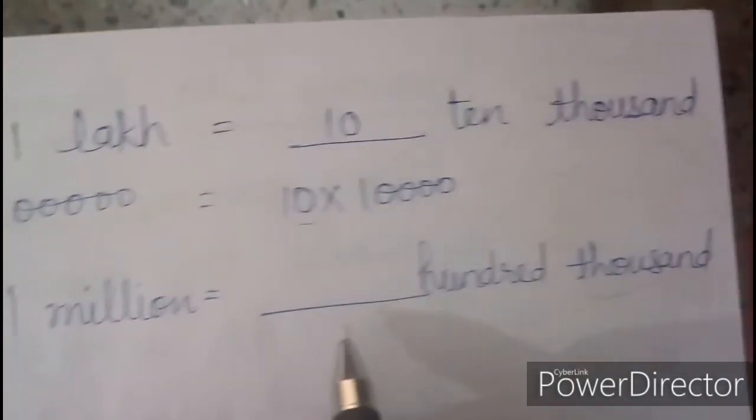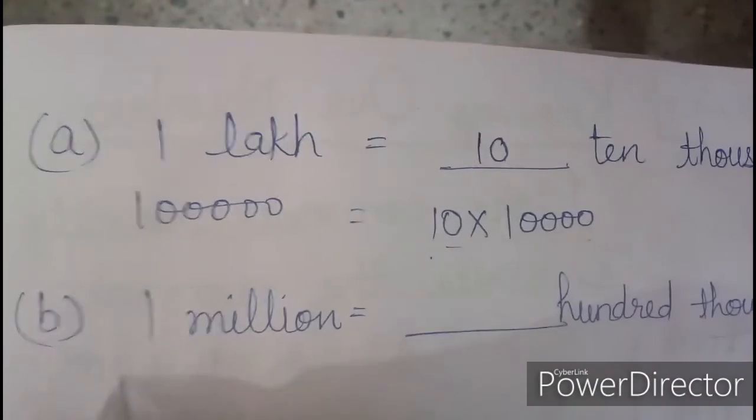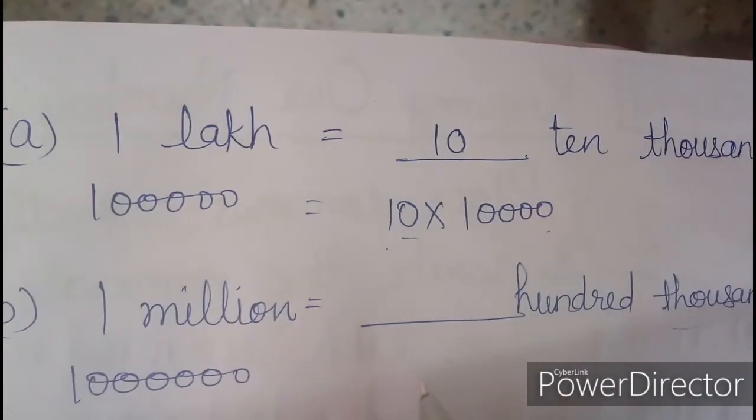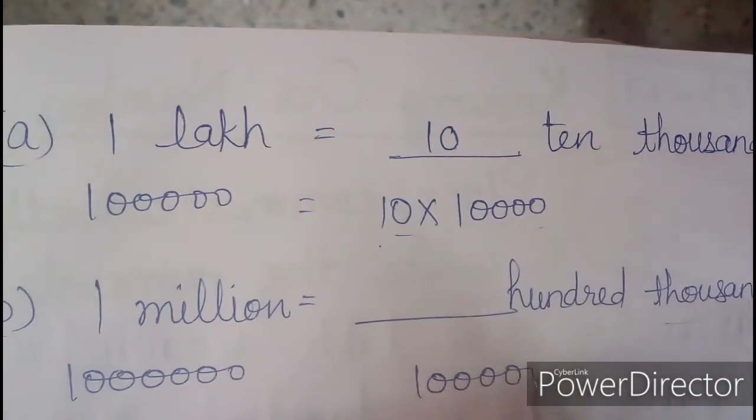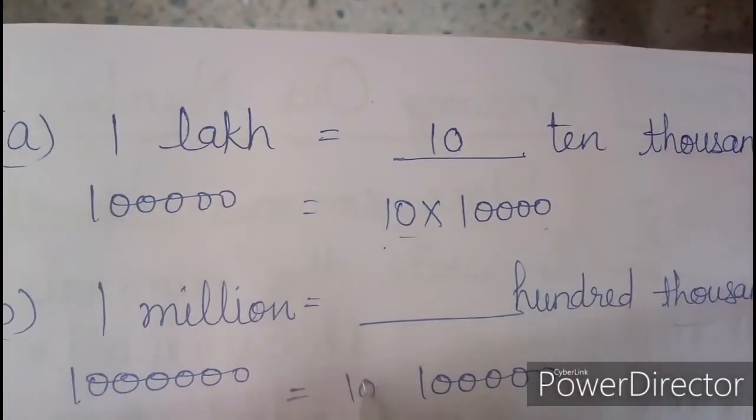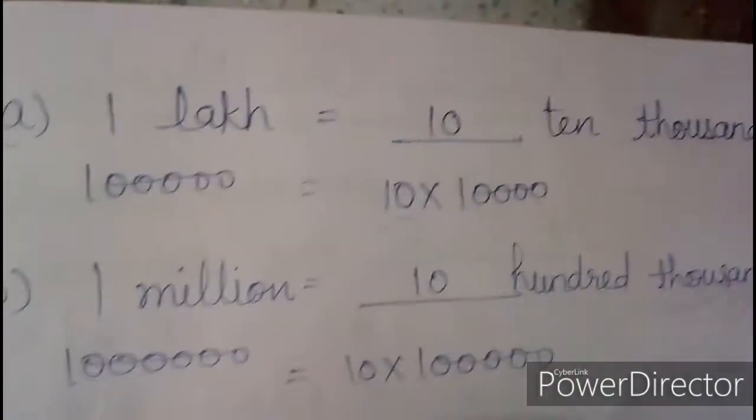Part B: 1 million is equal to dash 100,000. How many 100,000? 1 million has 6 zeros, and 100,000 has 5 zeros. Then how can we make them equal? Multiply it with 10. So 1 million is equal to 10 hundred thousand.